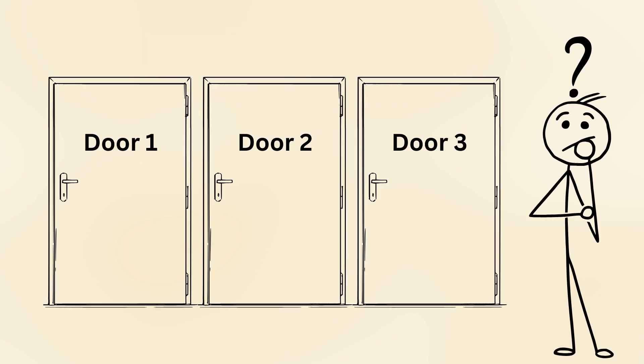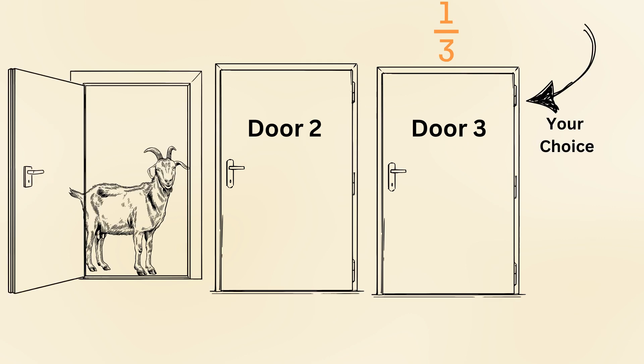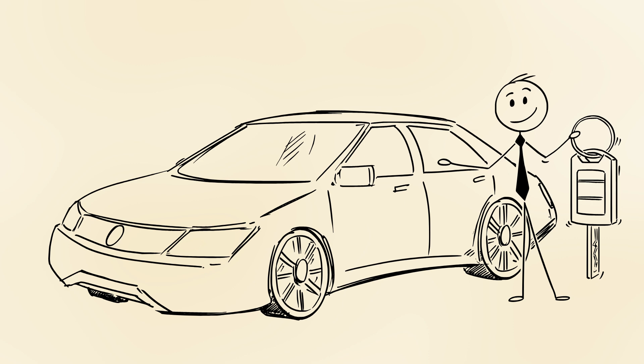In conclusion, if you're ever faced with the Monty Hall problem, remember that your first choice only had a 1-3 chance of being right. When the host reveals a goat behind one of the other doors, the remaining door holds a 2-3 probability of hiding the car. Therefore, switching doors is the best strategy to increase your chances of winning.